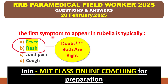The first symptoms to appear in rubella are typically fever, rash, joint pain, or cough? The right answer is fever and rash. There is some doubt, but both are correct.